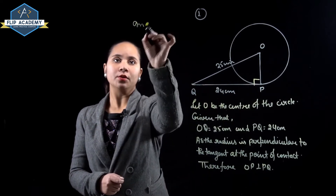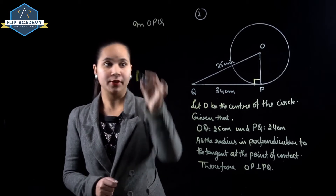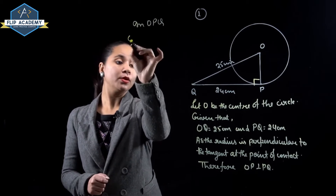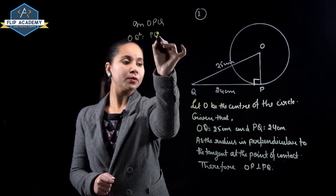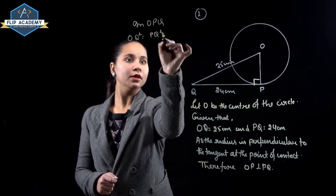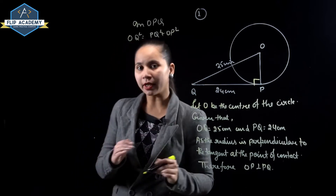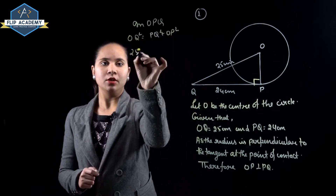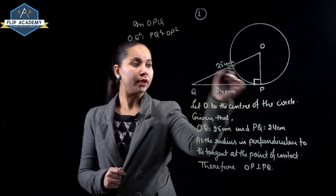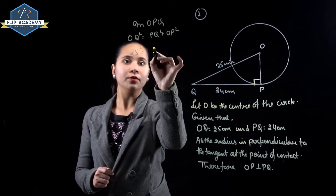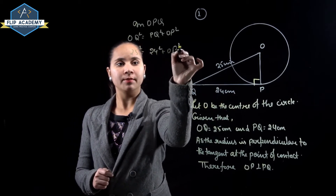Now in triangle OPQ, OQ squared is equal to PQ squared plus OP squared. OQ is given as 25, so 25 squared equals 24 squared plus OP squared.